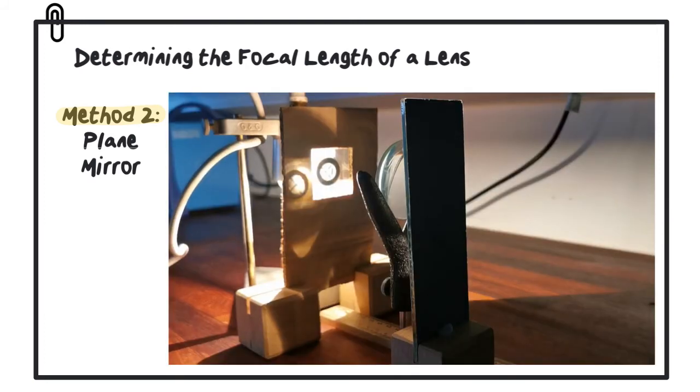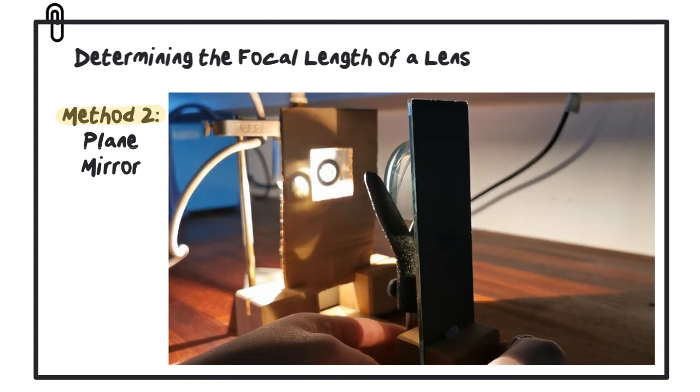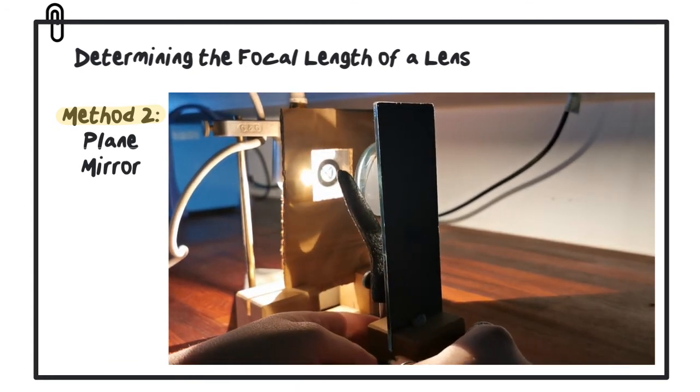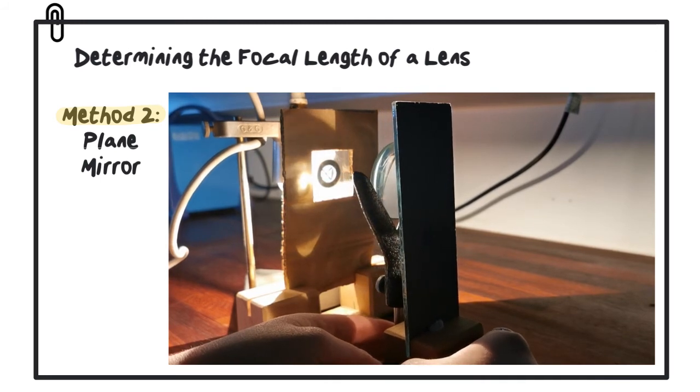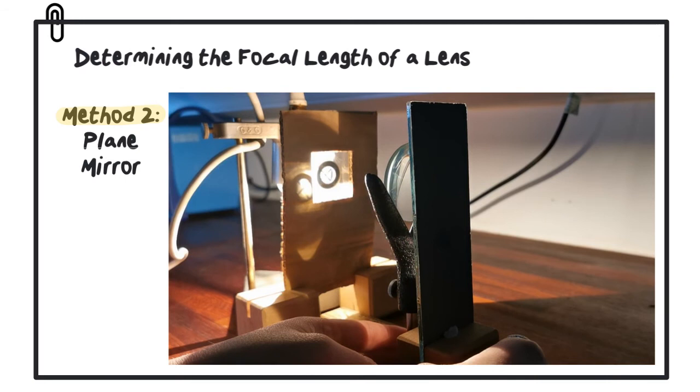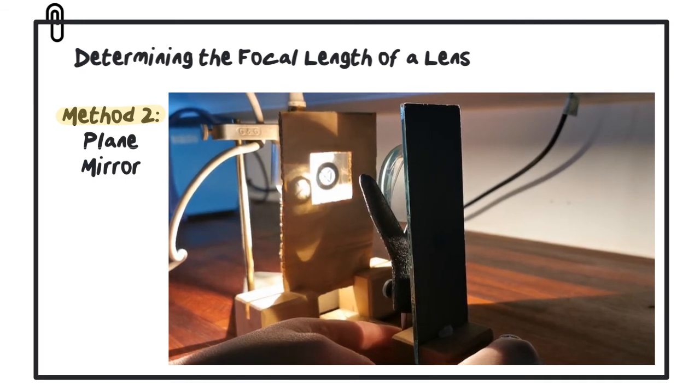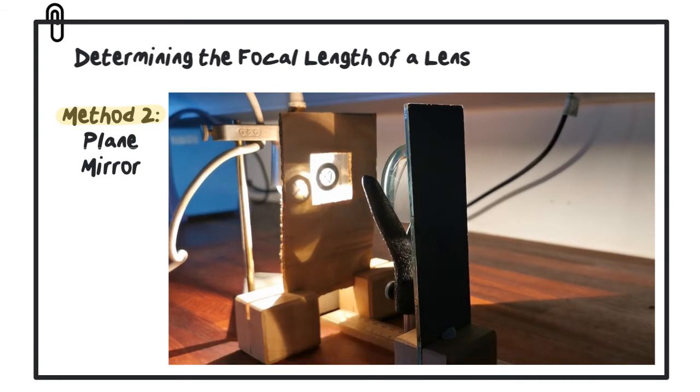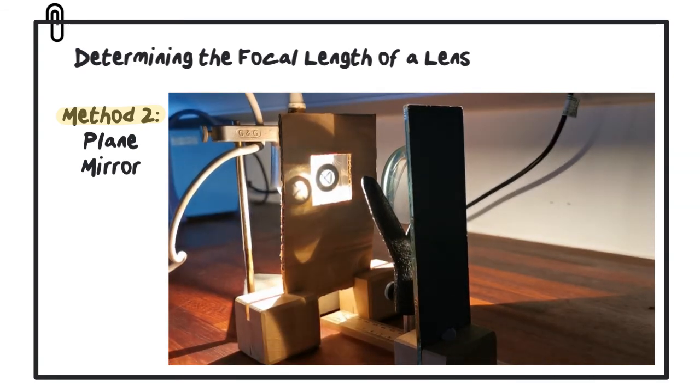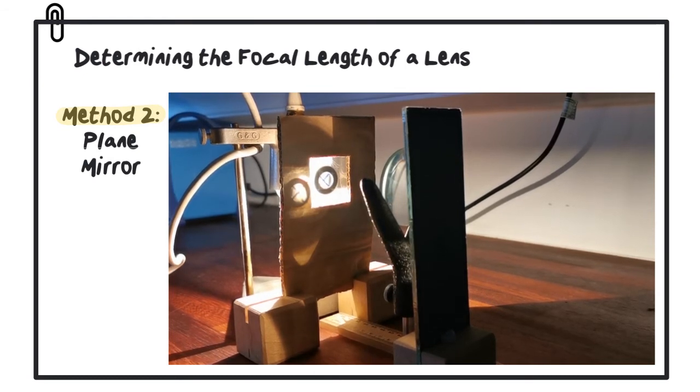If we look at this apparatus from a different viewpoint, you can see where the image is being formed right beside the object. As the lens and mirror are moved together, the image comes in and out of focus. We're looking to get that image sharp and clear. When we do that, we measure the distance between the object and the lens, and this gives us the focal length.